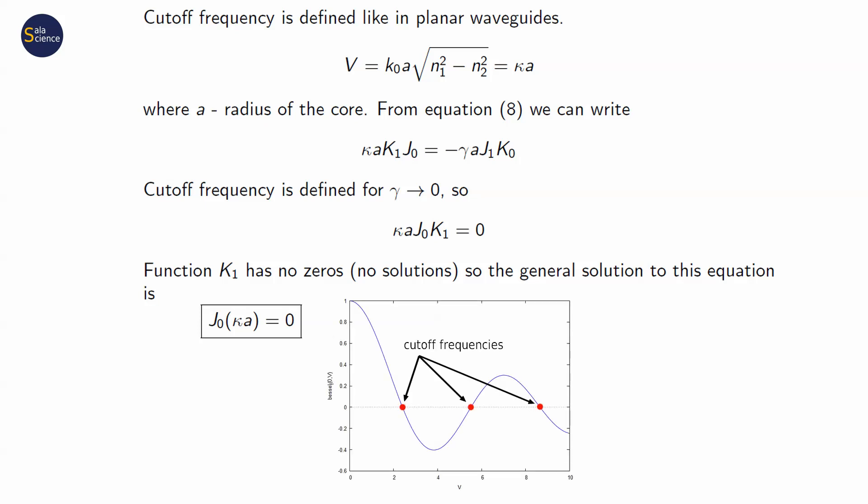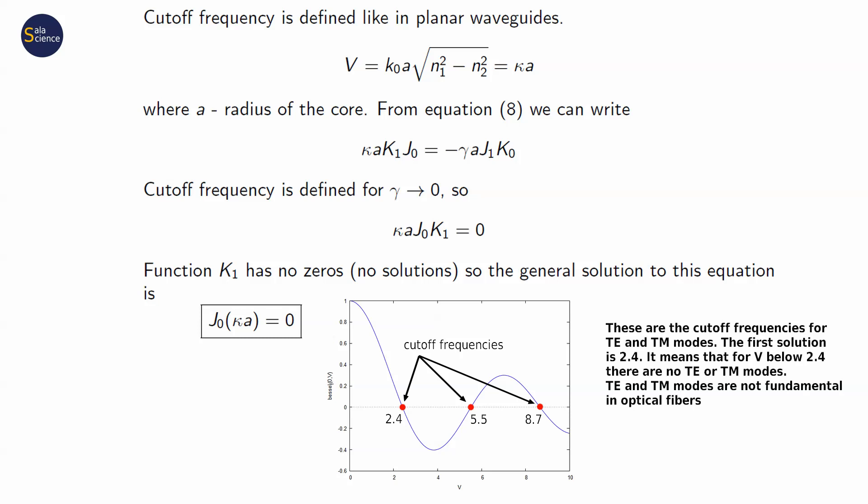The first one is for the frequency v equal to approximately 2.4. It means that if the normalized frequency of the fiber is lower than 2.4, there are no TE or TM modes.